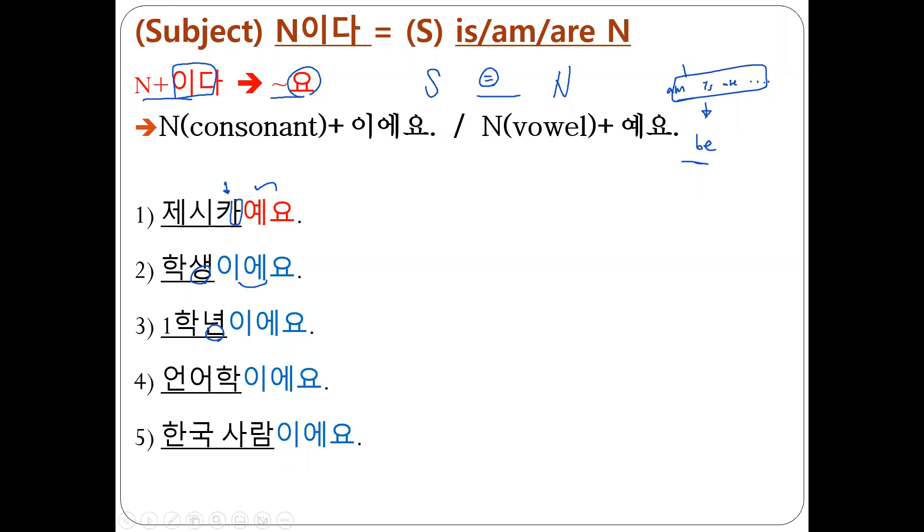Pronunciation students have difficulties to catch this one. So, I'm going to say it one more time. Listen to me. Where is doodling? Doodling? Doodling. 이에요. 이에요. 이에요. 이에요.